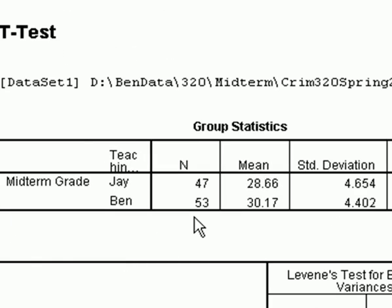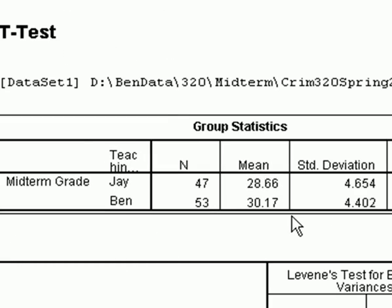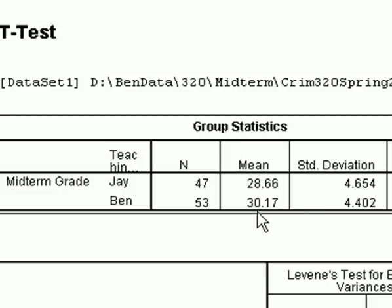I hit okay and the output pops up. The first thing I'd like you to focus on is the group statistics box. Here we can see that Jay had 47 students and Ben had 53 students. The mean for students who have Jay on the midterm out of 40 was 28.66. For Ben, slightly higher at 30.17. So there is some difference here — roughly 4 to 5 percentage points out of 100. The standard deviations are a little bit different as well, but quite close to each other. Same with standard error of the mean.